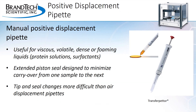The Braun Transfer Couture is an example of a manual positive displacement pipette. It is a useful tool for dispensing viscous or volatile liquids that cannot be accurately dispensed with an air displacement pipette. It is available in volumes from 100 microliters to 10 mils. The tips and piston seals are reusable, and the piston seal is designed to push the liquid entirely out of the tip, minimizing carryover between samples. However, changing the tips and piston seals is more labor-intensive than with air displacement pipettes, so this is a tool chosen only when needed for those more challenging liquids.